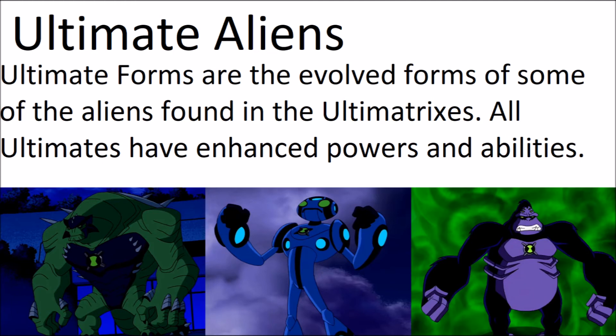Ultimate forms are the evolved forms of some of the aliens found inside the Ultimatrix, and all ultimates have enhanced powers and abilities. For example, whenever Humungousaur becomes Ultimate Humungousaur he turns his hands into rocket launchers and can shoot out missiles at his enemies. I also want to note that this is the only Omnitrix gimmick that did not feature Fourarms and Heatblast — seriously, why wasn't there an Ultimate Heatblast and Ultimate Fourarms so they could be involved with every Omnitrix gimmick?